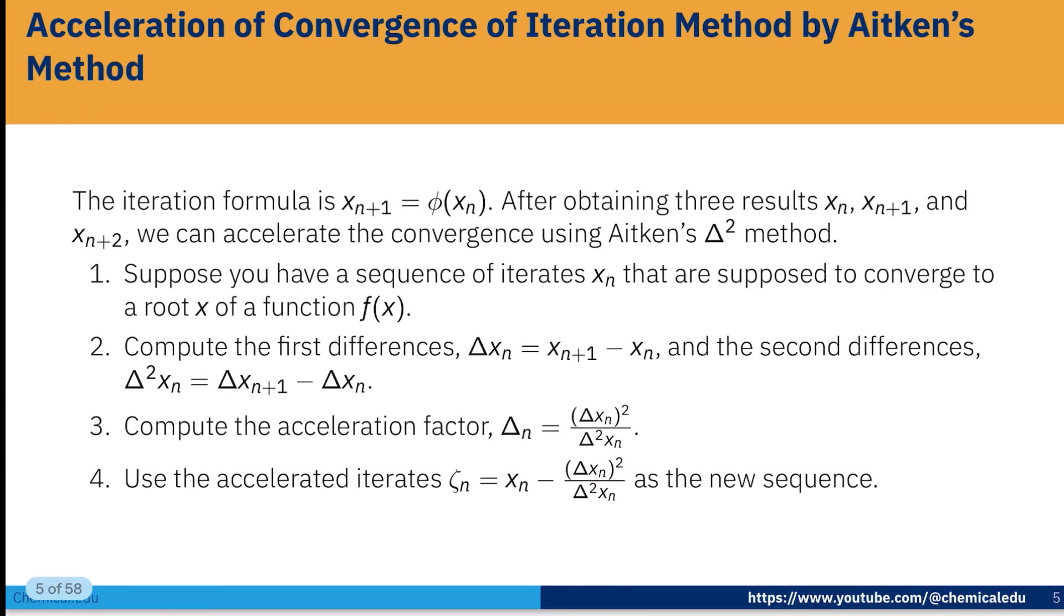First, what is Aitken's method? We have to convert the equation in the form x_{n+1} = φ(x_n). After obtaining three results x_n, x_{n+1}, and x_{n+2}, we take some guess and then get x_{n+1} and x_{n+2}. Then we can accelerate the convergence using Aitken's delta square method.